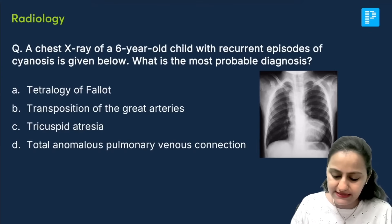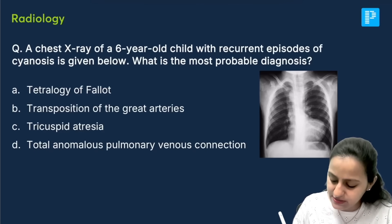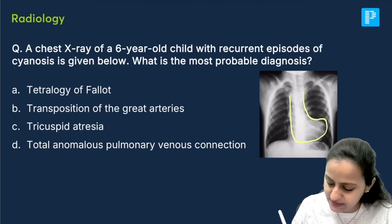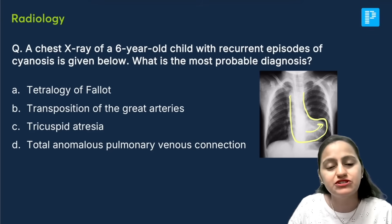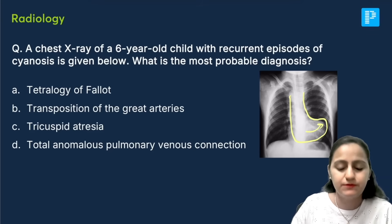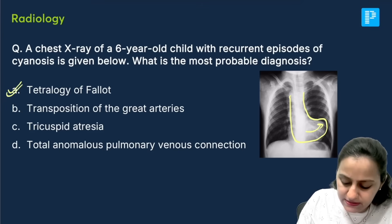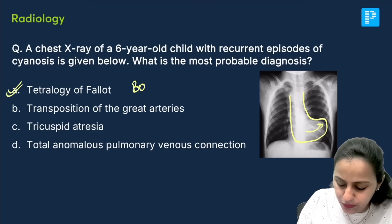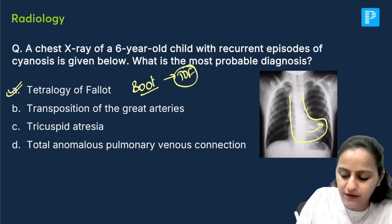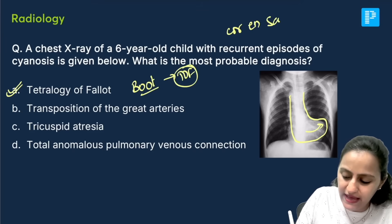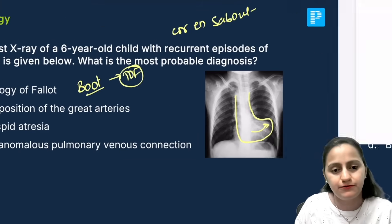The next question is an x-ray of a child with stenosis — what is the diagnosis? Look at the classical boot-shaped heart with the apex going up due to right ventricular hypertrophy (RVH) in tetralogy of Fallot. This boot-shaped heart is seen in tetralogy of Fallot and is also called coeur en sabot. It is caused by the RVH in tetralogy of Fallot.